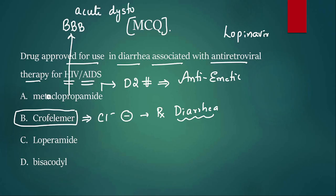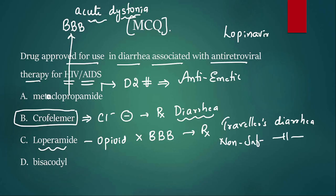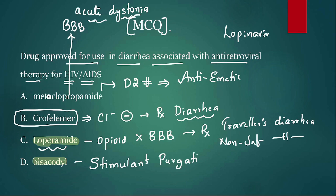Tell me in the comment section: what is the treatment for acute dystonia caused by metoclopramide? Loperamide is an opioid that does not cross the blood-brain barrier and is used to manage traveler's diarrhea as well as non-infective diarrhea. Remember: loperamide is contraindicated in infective diarrhea and in children less than four years. Bisacodyl is a stimulant purgative used to manage constipation. The answer for this question is B, crofelemer.